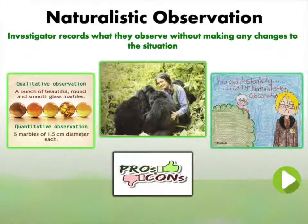Naturalistic observation involves an investigator recording what they observe without making any changes to the situation. They observe naturally occurring behavior in its natural setting — no lab manipulation, no variable manipulation. One pro is that we can see what people do in their natural habitat without changes due to labs or tests or fabricated stimuli, giving high external validity. A con is that we can't control any environmental factors, so we can't draw causal conclusions or make causal inferences.